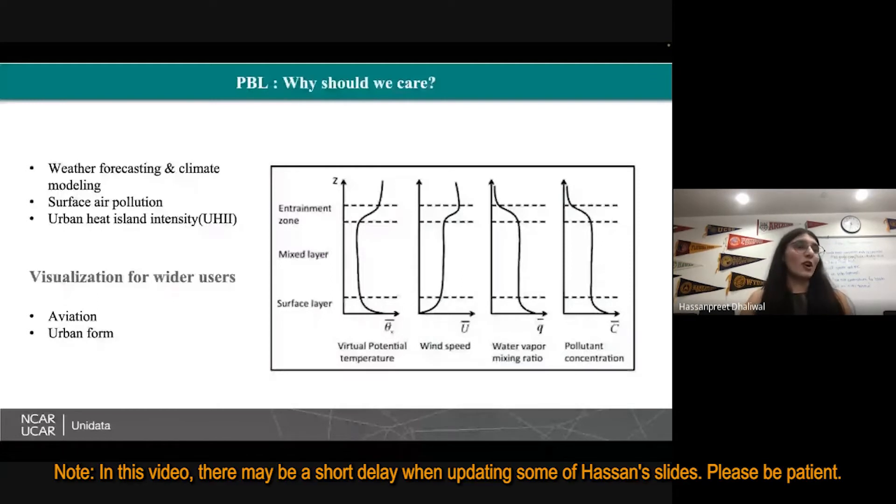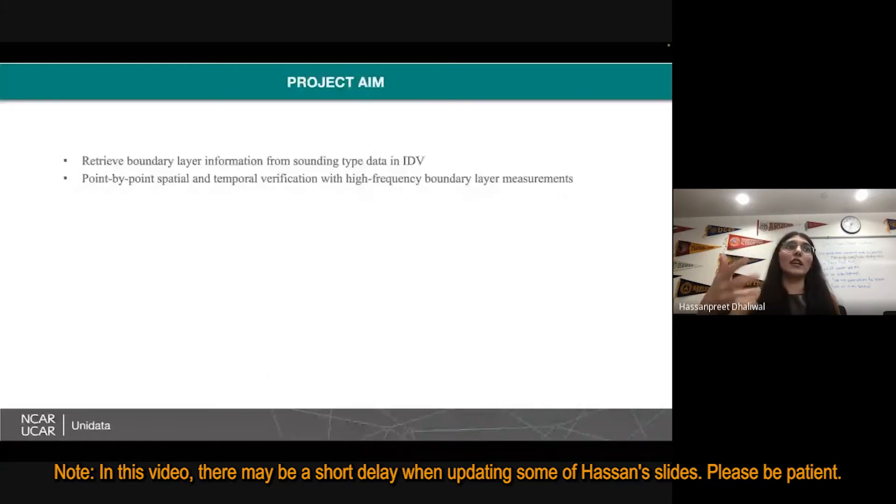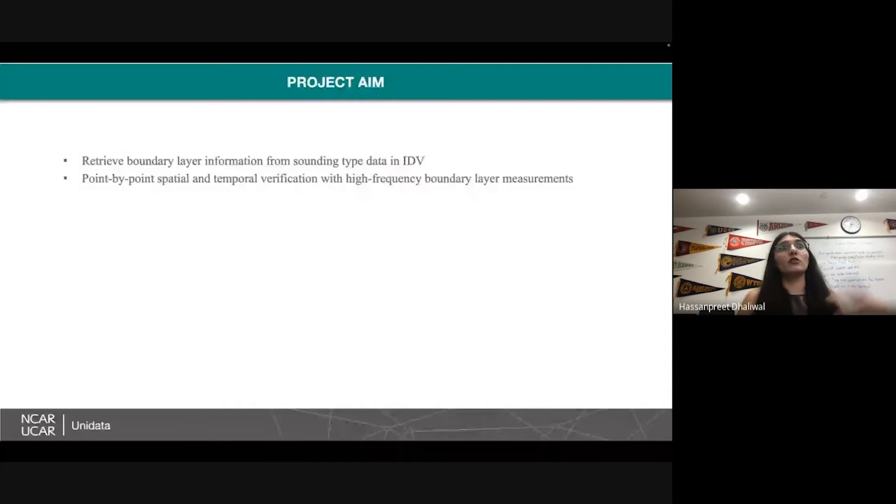The main aim of the project for this summer was to retrieve the boundary layer information from sounding type data in IDV. Why did I choose sounding type data? Because essentially we need a vertical profile to calculate the boundary layer parameters, and sounding type data is perfect for that. We also wanted to verify if what we are retrieving is indeed boundary layer. So we wanted to do a point by point spatial and temporal verification with really relevant high frequency boundary layer measurements.